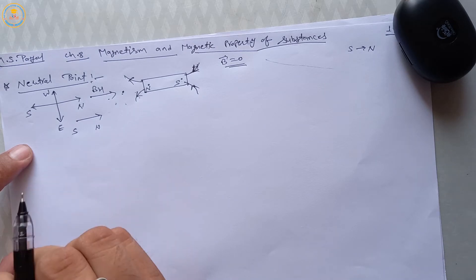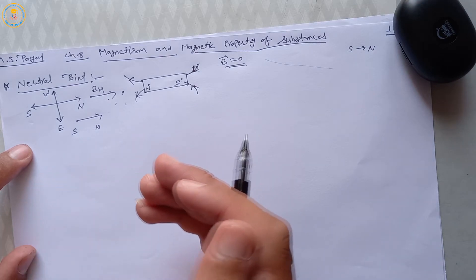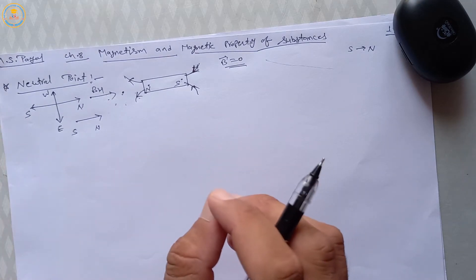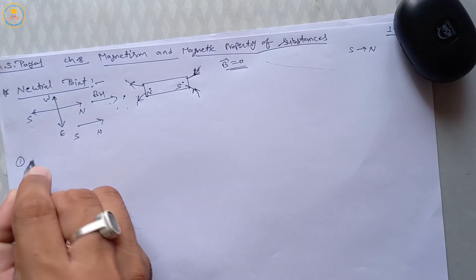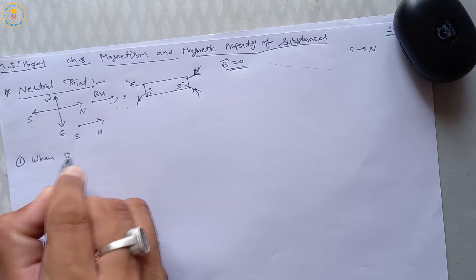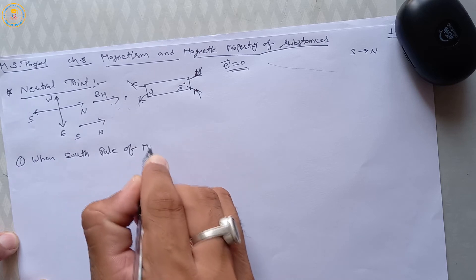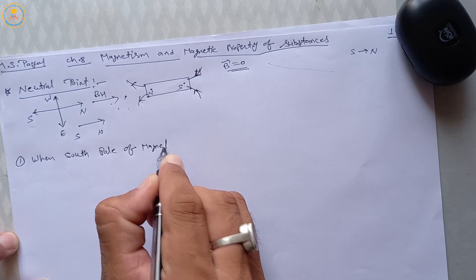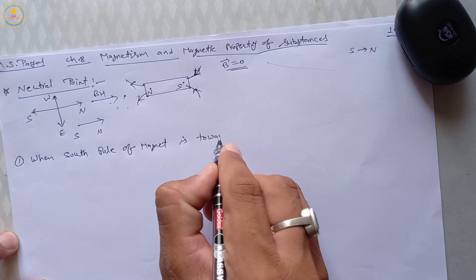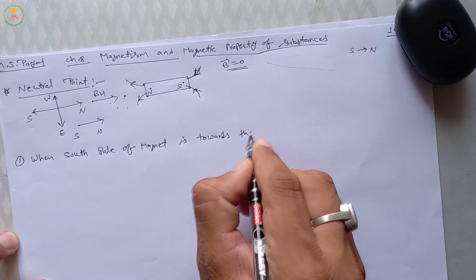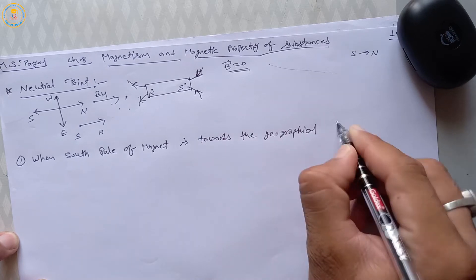The position of these neutral points depends on the position of the bar magnet. The first condition is when the south pole of a magnet is towards the geographical north.